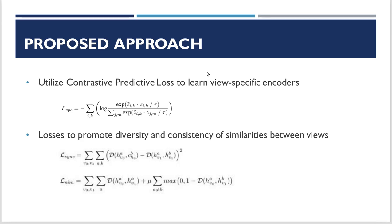This is our full approach. We have the loss for contrastive predictive coding, and we also have a loss to promote diversity and consistency of similarities, which is how we enforce this cooperative training.